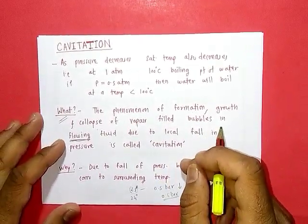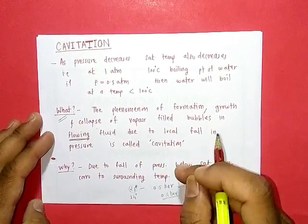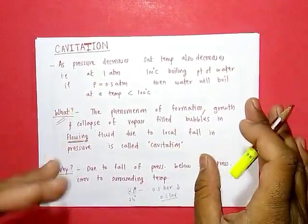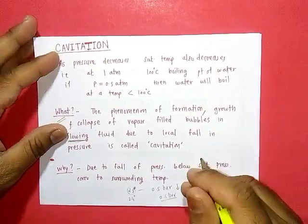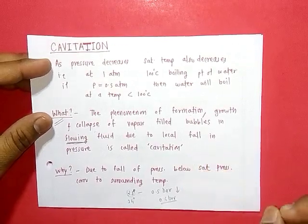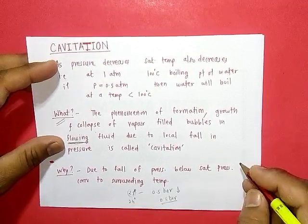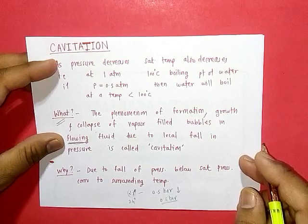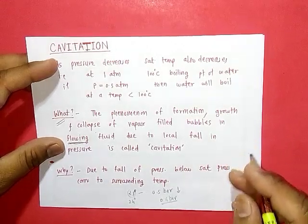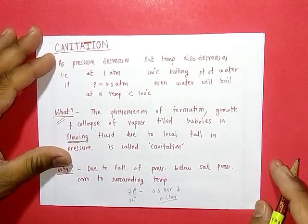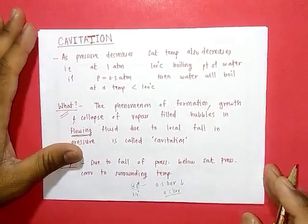In summary, cavitation arises due to a local fall of pressure at low pressure regions such as the draft tube inlet or runner outlet. As pressure decreases, vapors form, bubbles grow, and when they flow to high pressure regions they collapse. When bubbles collapse near the walls of the draft tube, the surrounding water strikes the surfaces causing erosion.